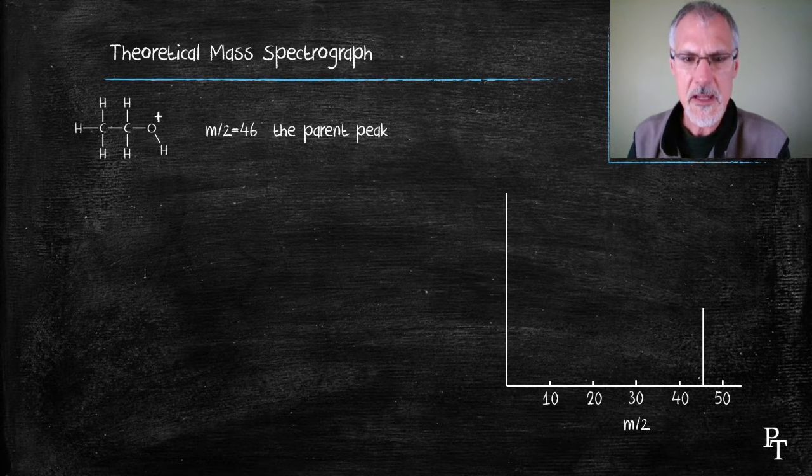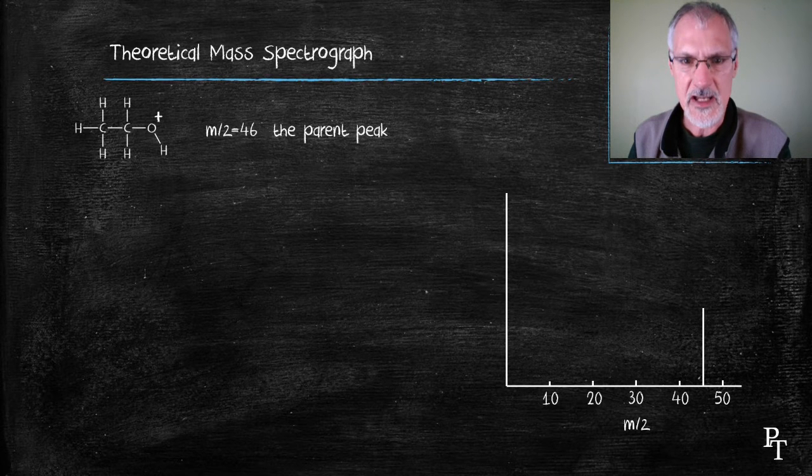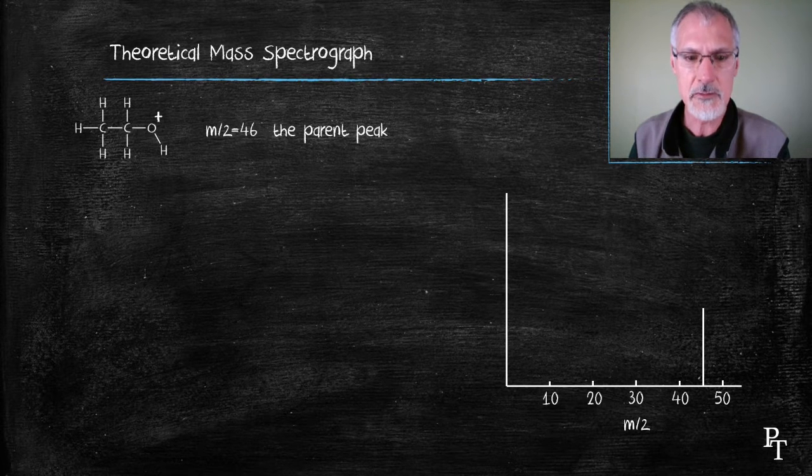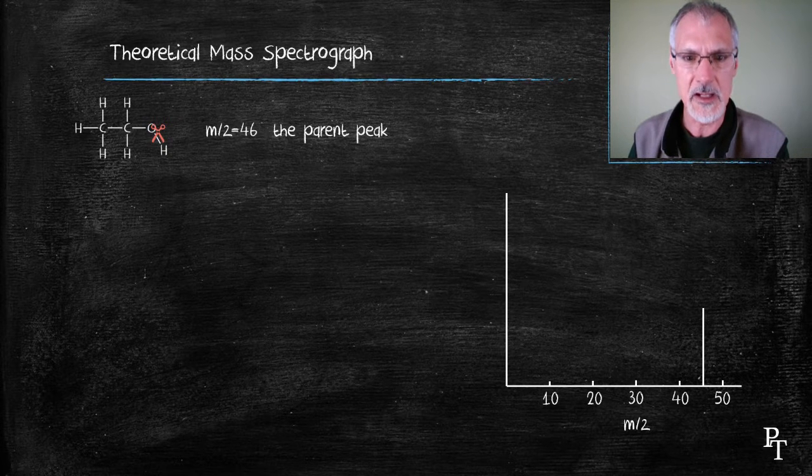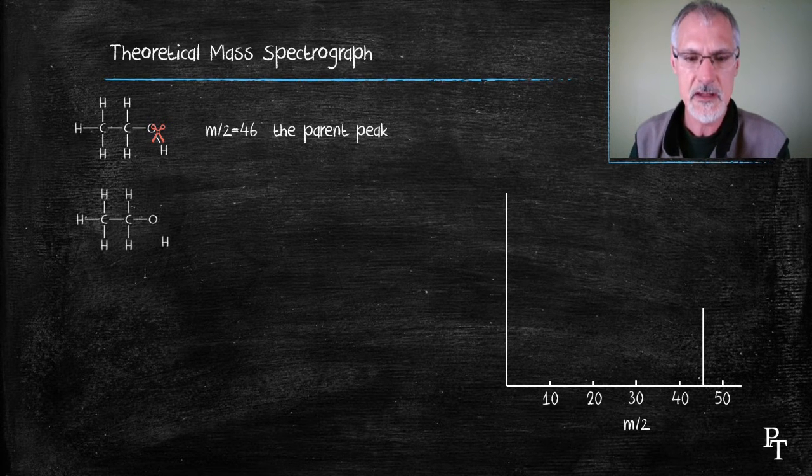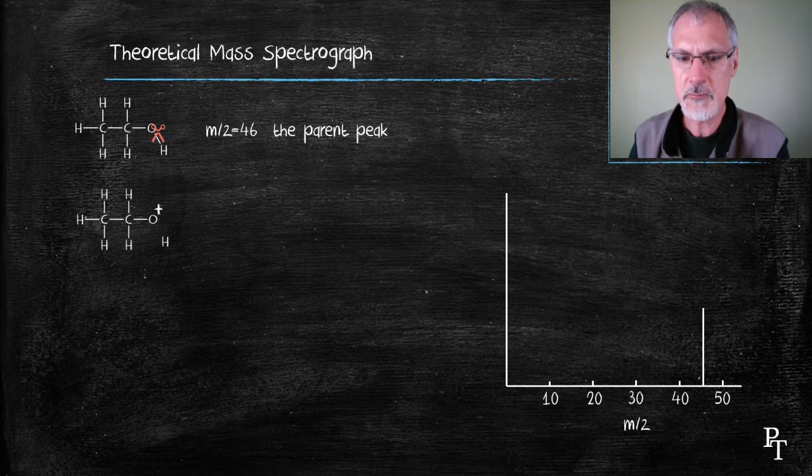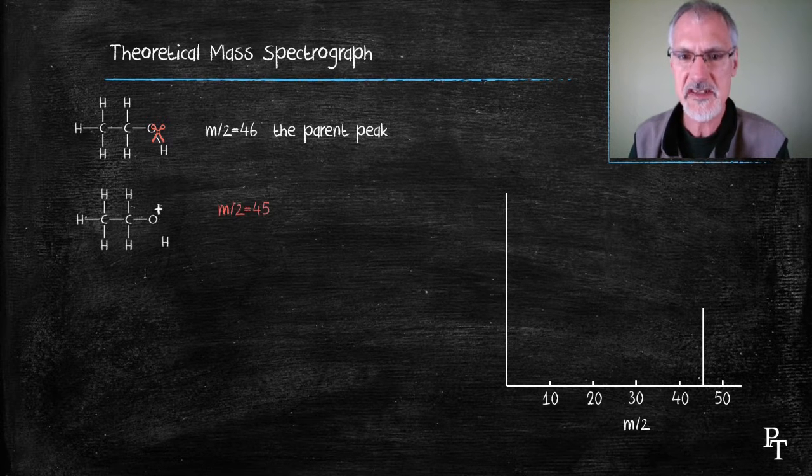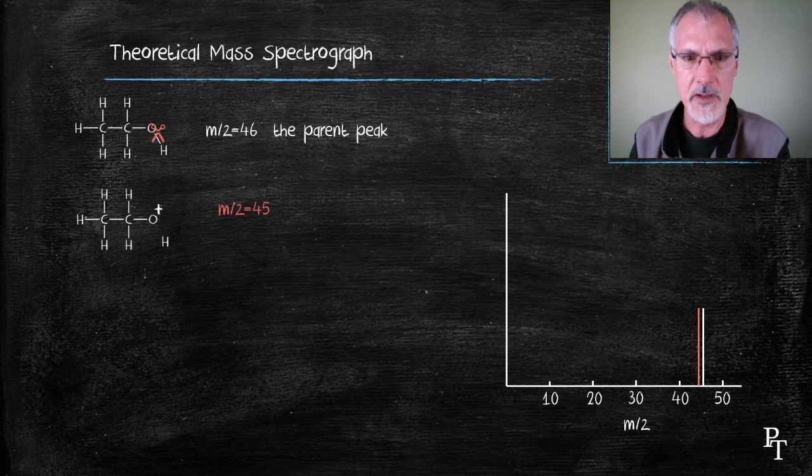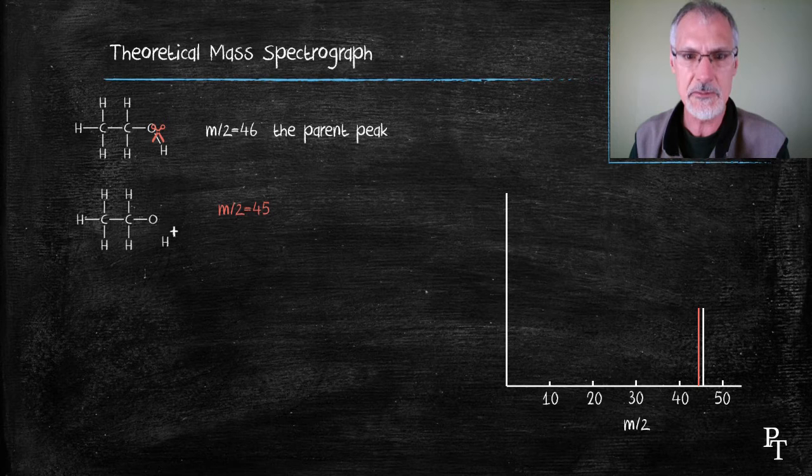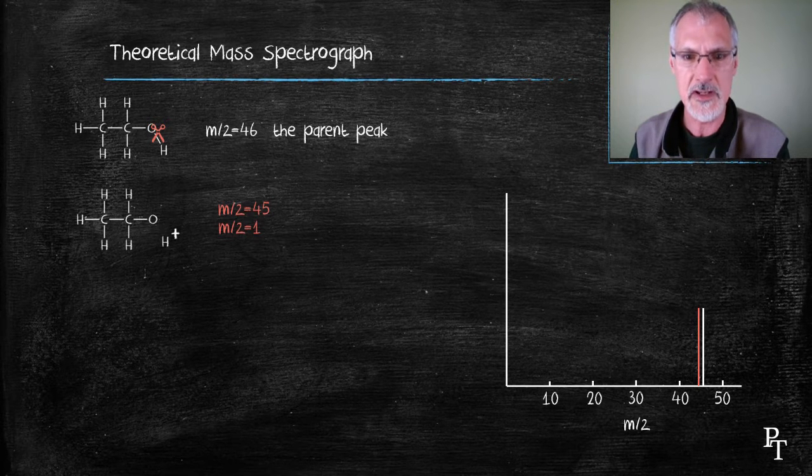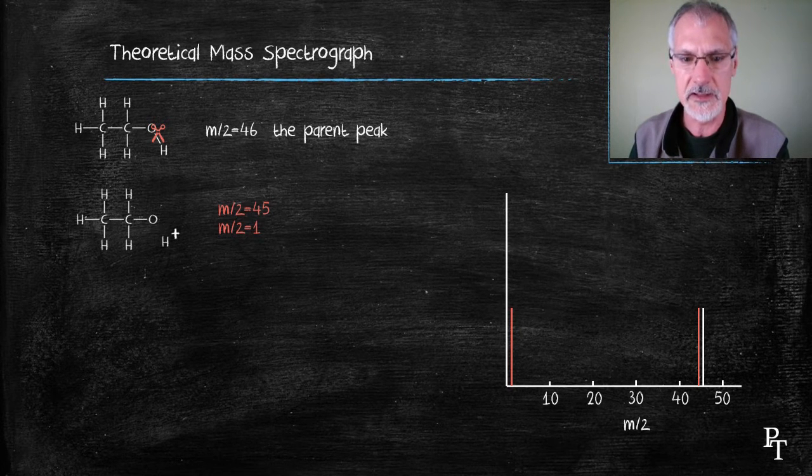Now, if that particular ion when subject to x-rays was to break apart, which does happen, I would then have two fragments. Let's suppose the fragment on the left develops the positive charge. The mass over charge ratio for it would be 45, and I would get a second peak appearing on my graph, one less than the parent peak. If the positive charge was to reside with the hydrogen, I would get a mass over charge ratio of one and a peak appearing at one.